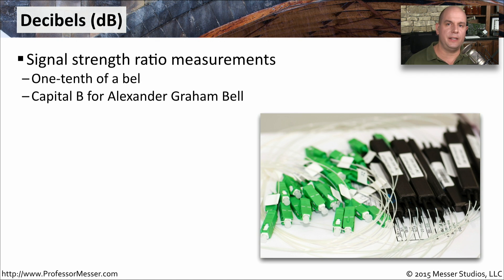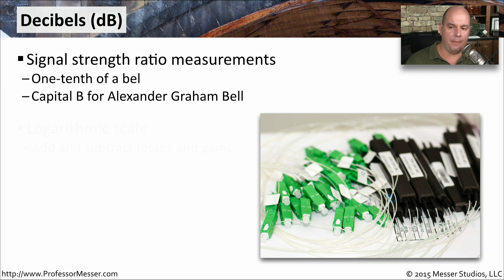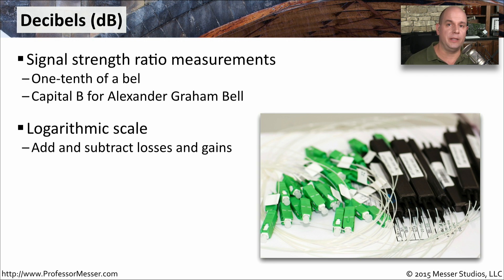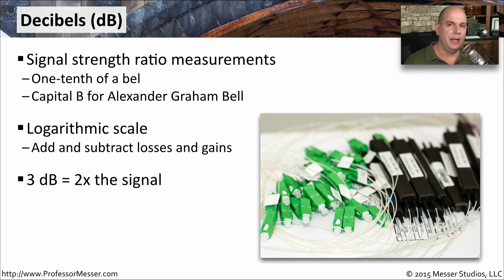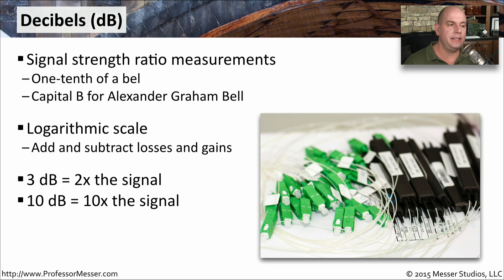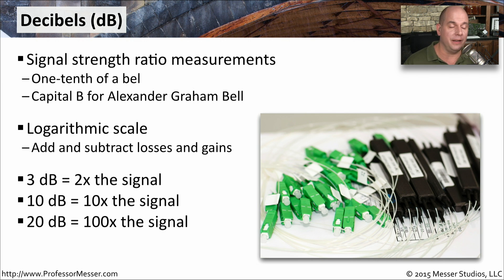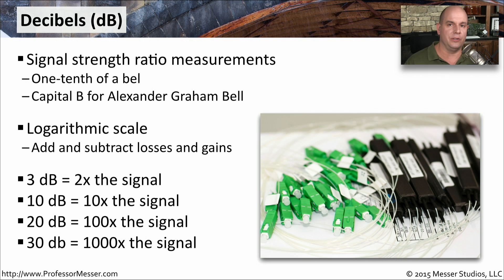The amount of signal strength is measured in decibels. This is one tenth of a bel, and this bel stands for Alexander Graham Bell. So you'll notice every time we abbreviate decibels, we have the capital B to stand for Alexander Graham Bell's name. This is a logarithmic scale, and we use simple addition and subtraction to calculate the amount of signal strength. Because this is a logarithmic scale, the numbers may not be what you expect. A 3 dB change is twice the amount of signal change. A 10 dB change is 10 times the change. A 20 dB change is 100 times the signal change. And a 30 dB change is a 1,000 times difference in the amount of signal on that particular medium.